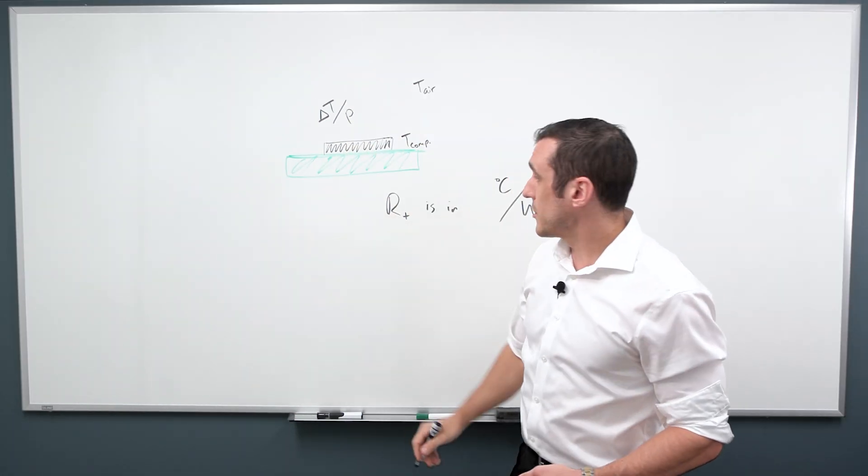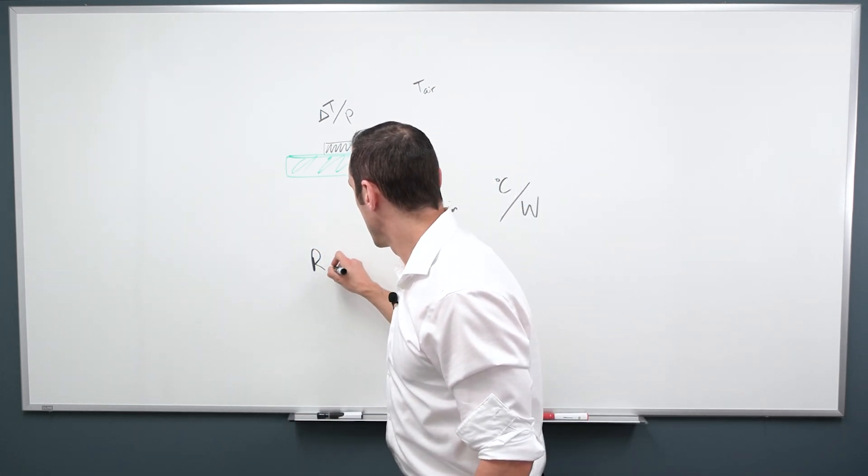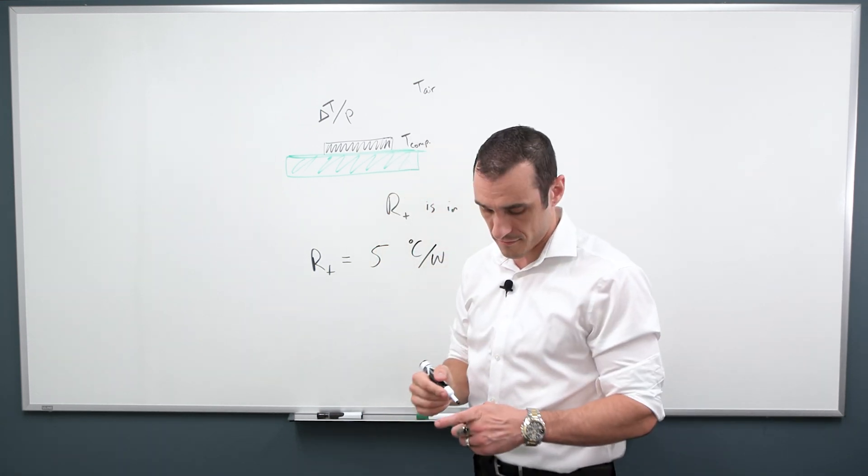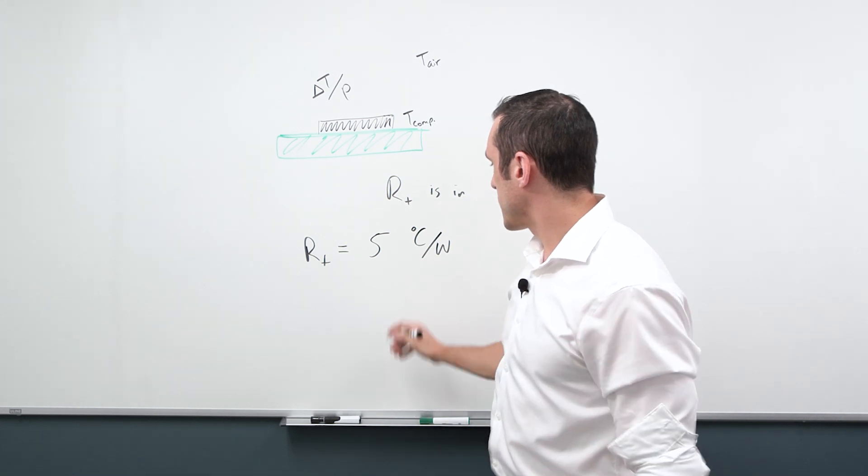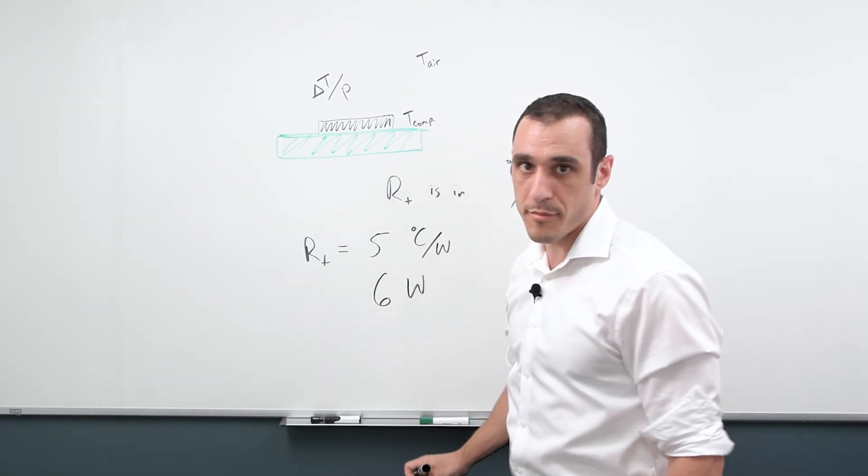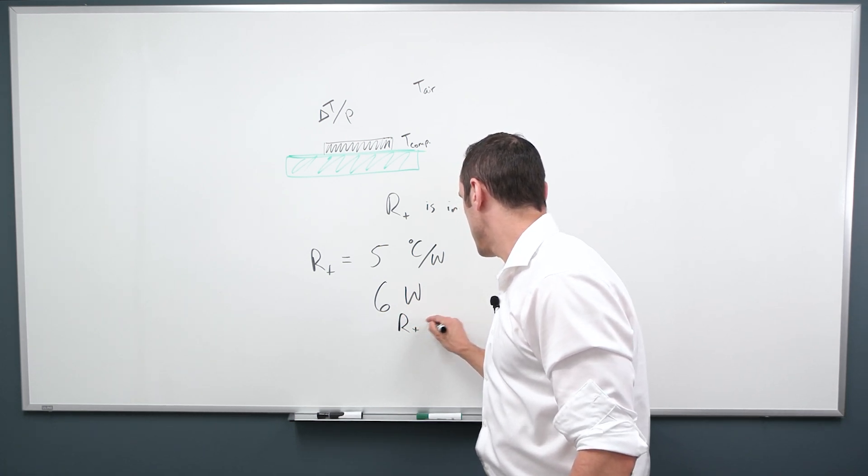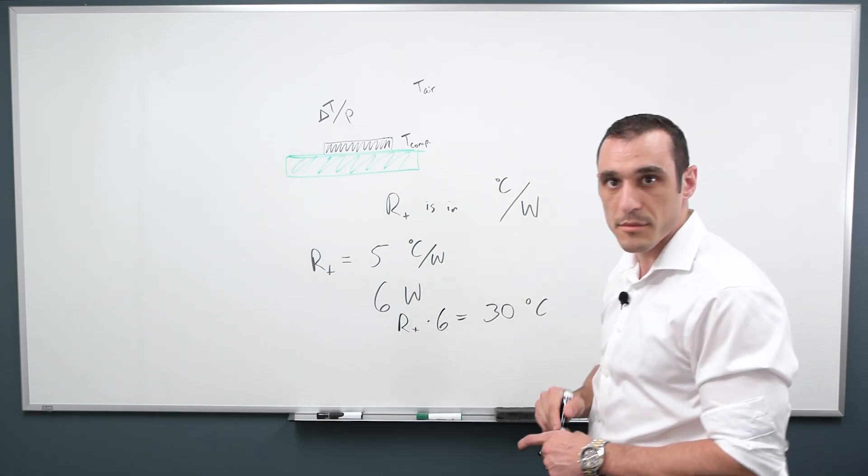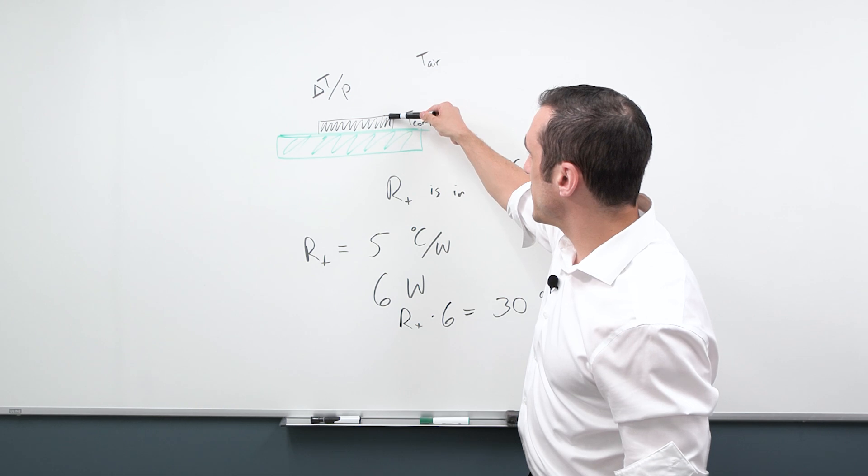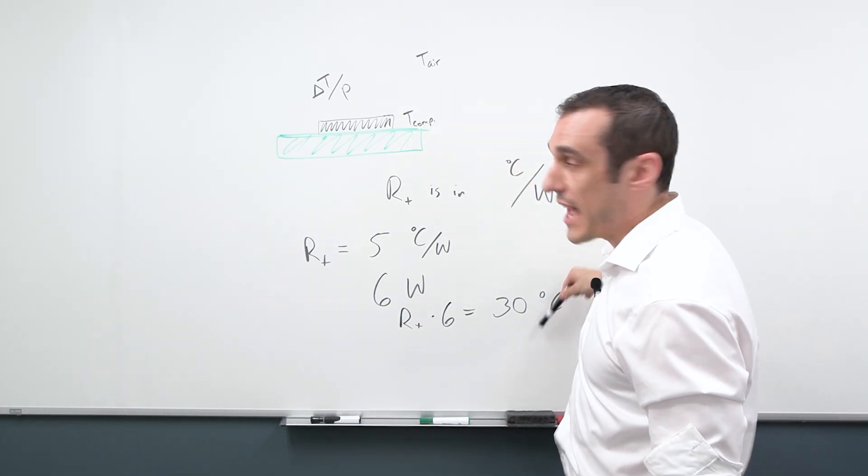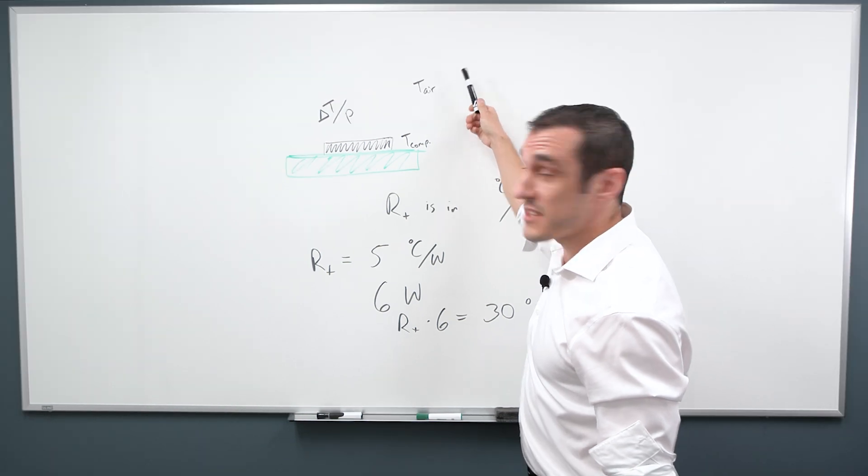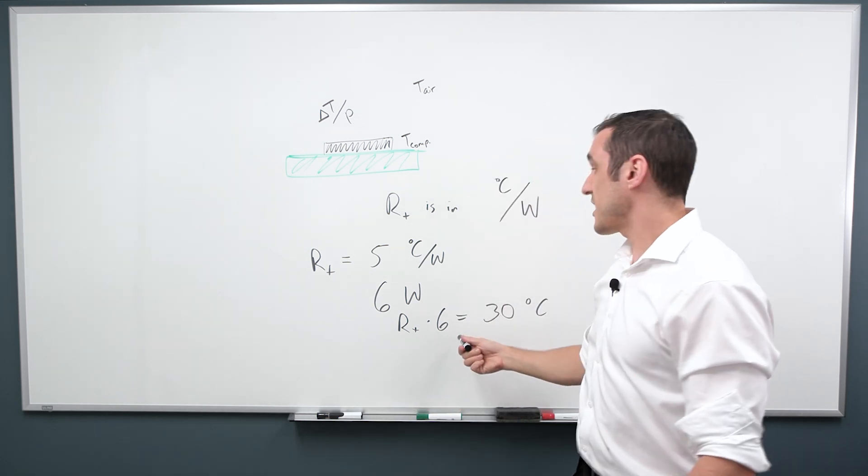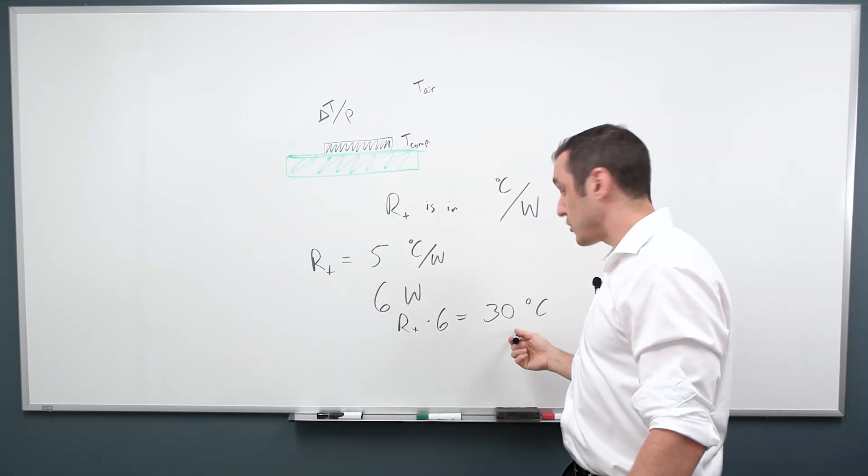So just as a quick example, let's say we have a component where RT is 5 degrees C per watts. And let's just say that this component is dissipating 6 watts of power. Well, RT times 6 gives me 30 degrees Celsius. Pretty simple, right? So what this says is that this component is going to be 30 degrees hotter than whatever the temperature of the air is.